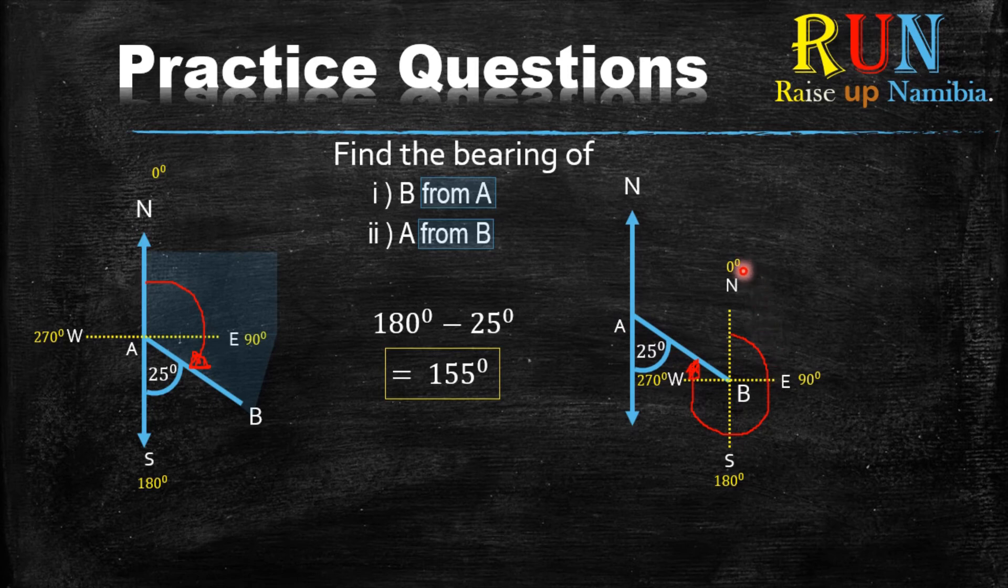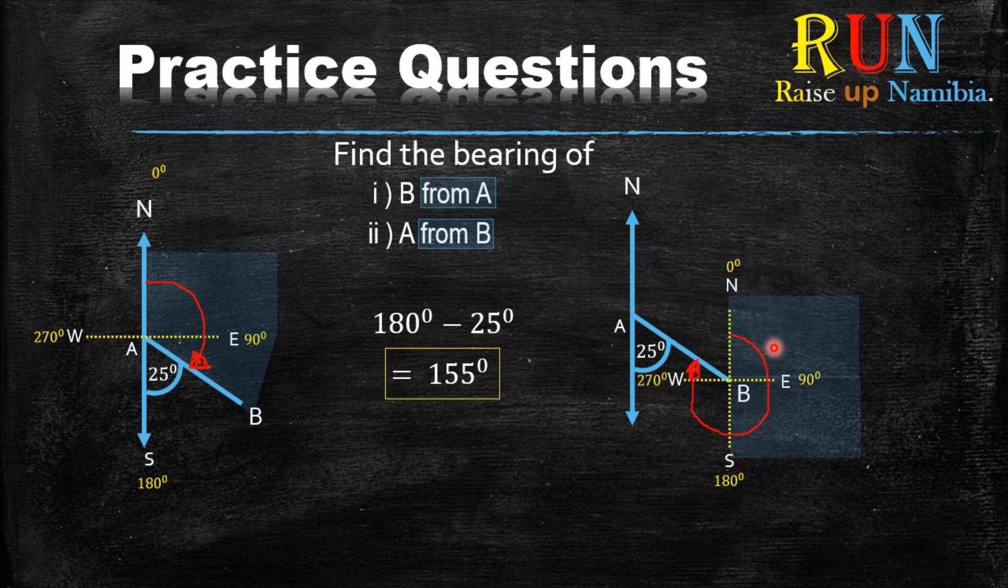Now from here we know that from 0 or from the north to the east is 90 degrees. From the north to the south, that will give us a 180. Here it will give us 270. But now we have an extra angle again here. We don't really know what this bearing is or what angle it is until the line of A. So if we knew what angle this was, then we could just say 360 minus this angle.